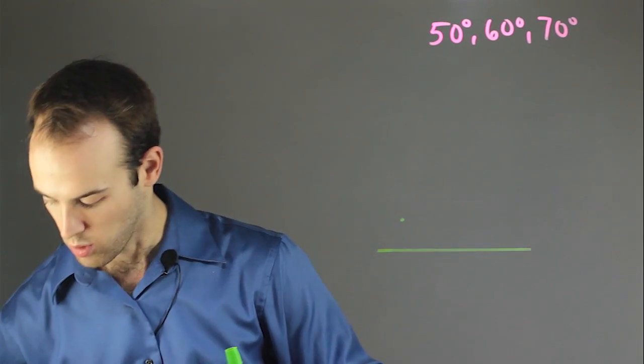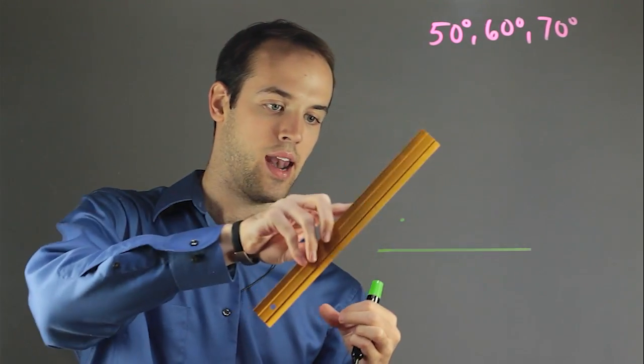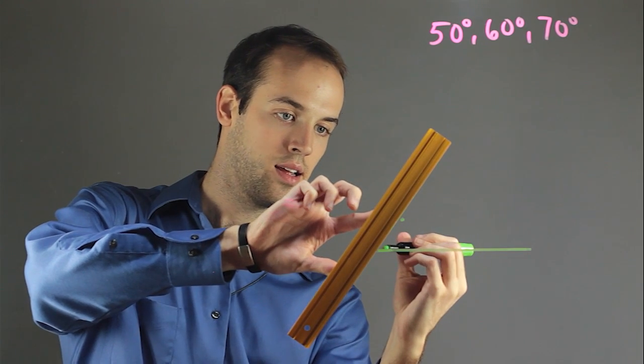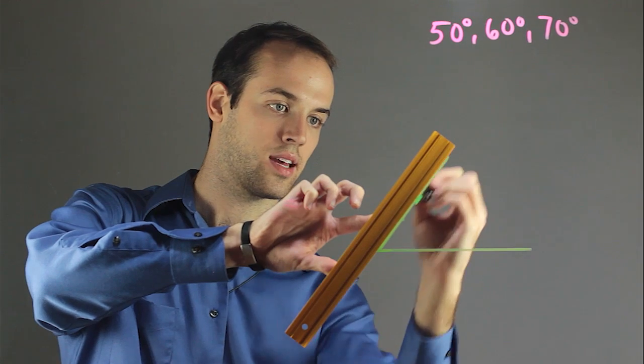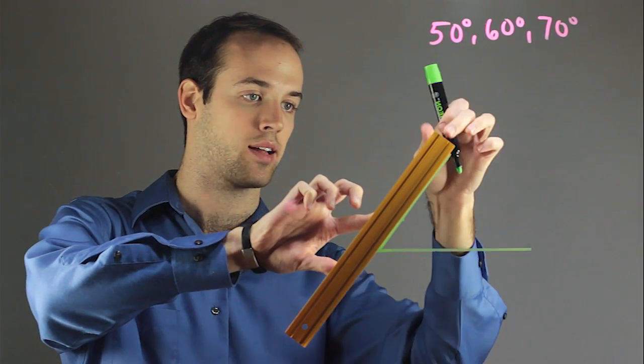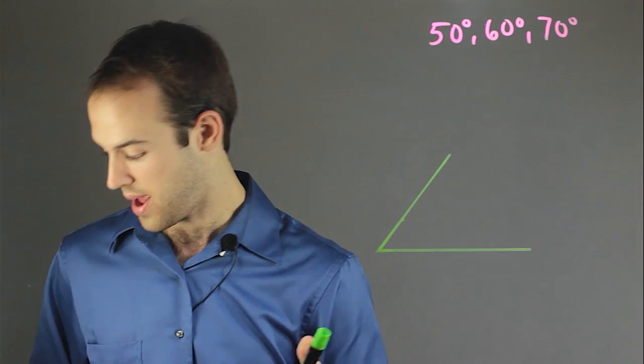And now I go back to my ruler and I simply connect the base through that point and extend it up. Just like that. And it doesn't matter exactly how far I extend it. It just matters how big you want your triangle to be.